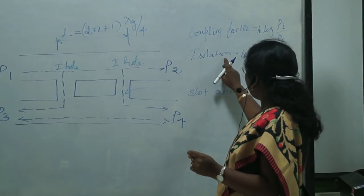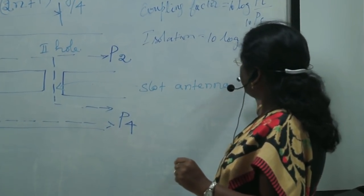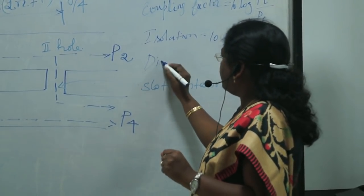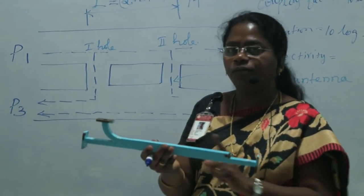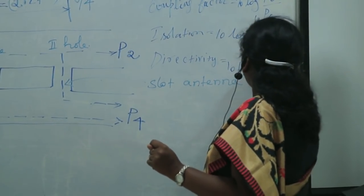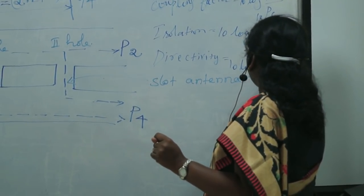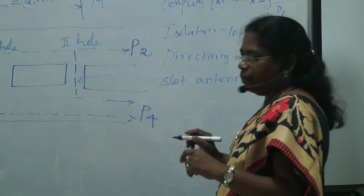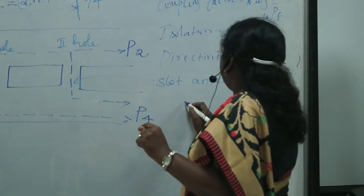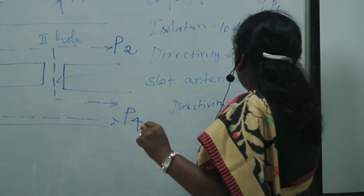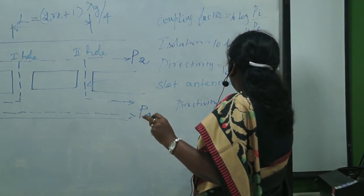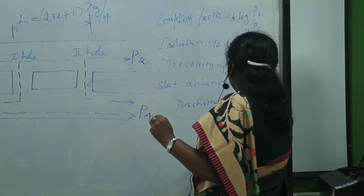Directivity is the capability of the directional coupler to differentiate the forward power from the backward power. Directivity = 10 log(Pf / Pb), that is, the ratio of forward power to backward power. Alternatively, directivity can be calculated as the difference between the coupling factor and isolation: Directivity = Coupling − Isolation.